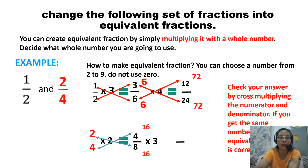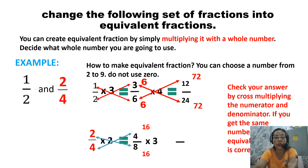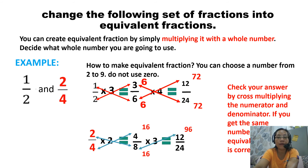Now take 4/8 and multiply by counting number 3 to get another equivalent fraction: 4 times 3 equals 12, and 8 times 3 equals 24. To check whether 4/8 and 12/24 are equal fractions: 8 times 12 equals 96, and 4 times 24 equals 96. Therefore, 4/8 and 12/24 are equivalent fractions.